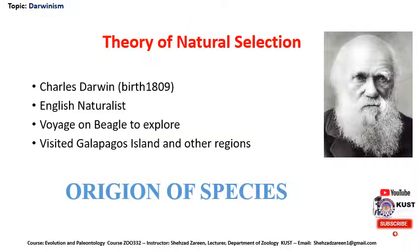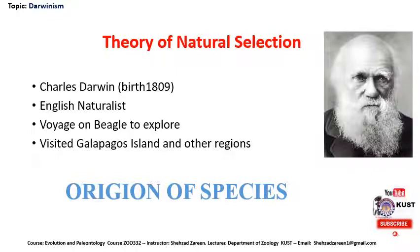Darwinism is also called the theory of natural selection, which was presented by Charles Darwin. Charles Darwin was an English naturalist. During his voyage on the Beagle to explore the earth — the word voyage is used for an aquatic journey while Beagle is the name of a royal sea ship — he visited Galapagos Island and other regions of the world to study the origin of species.